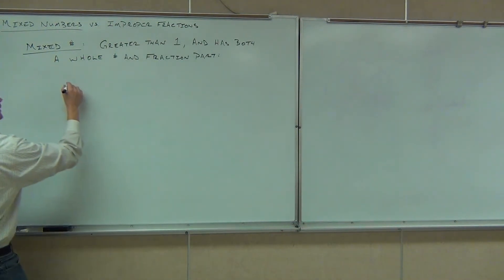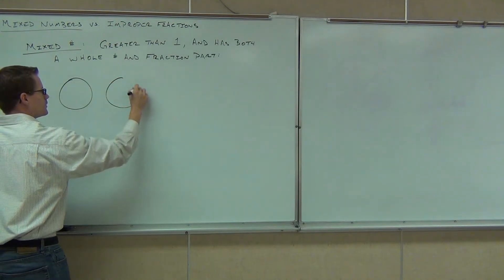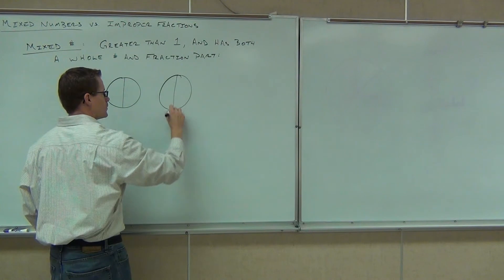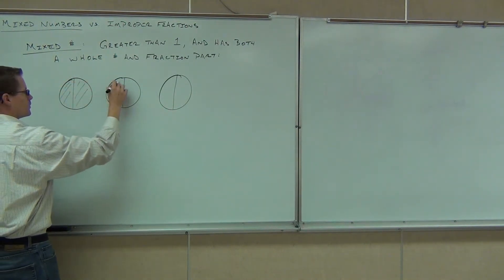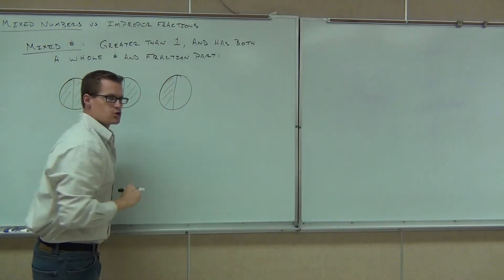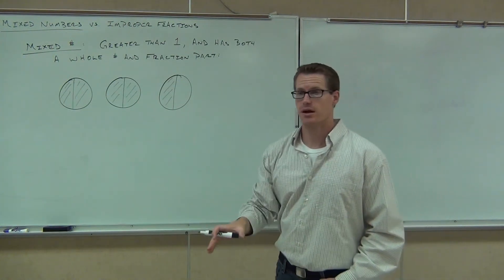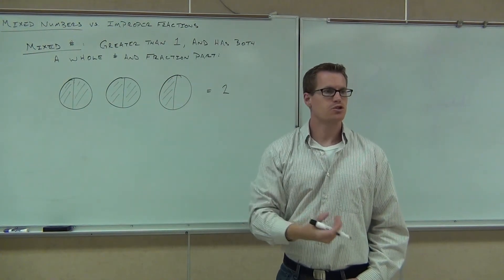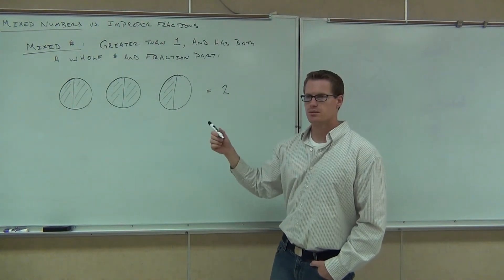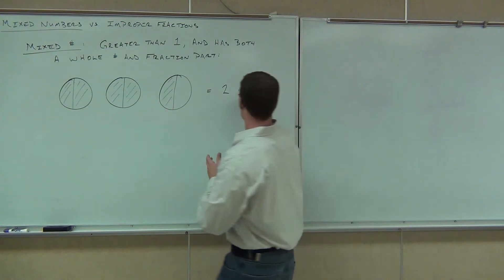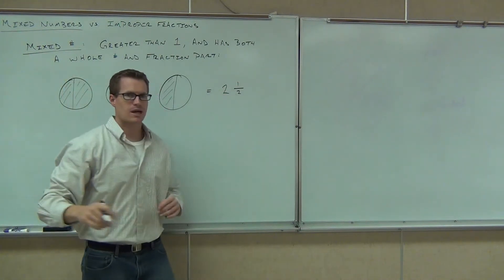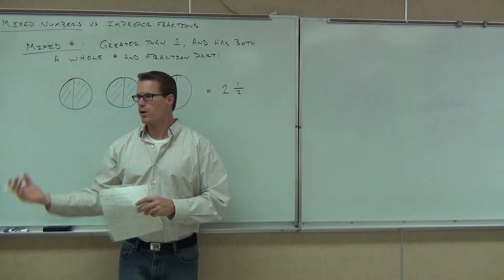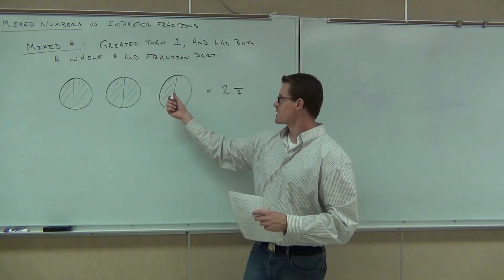And it also has a whole number and a fraction part. Let me give you an example. Do I have more than one? Yes. How many holes do I have? Two. Do I have anything more than two? One half. It's cut into two pieces, so our denominator is two, and only one of them is shaded — that's how we're getting the one half. So that's two and a half — a mixed number. It's got a whole number part, that's our two, and it also has our fraction part, that's our one half.